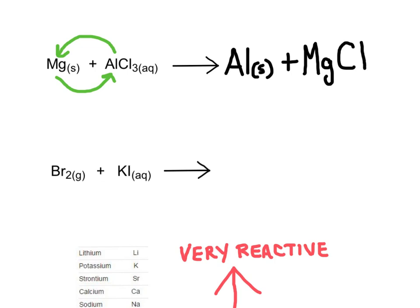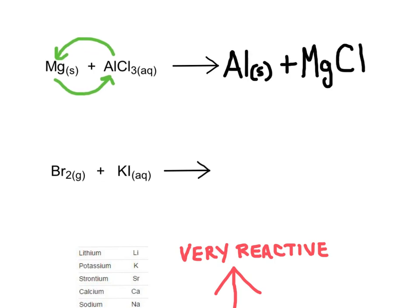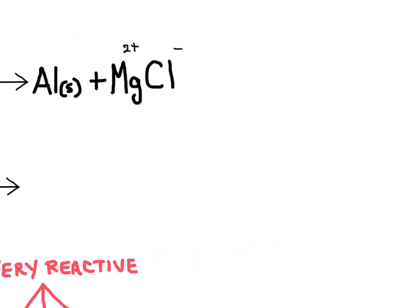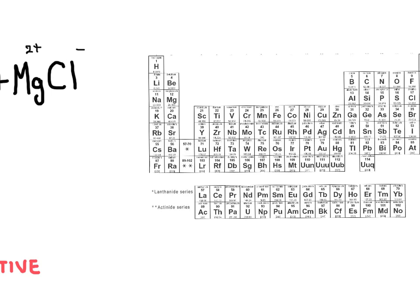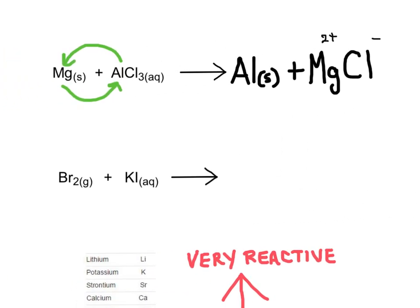To write the product, I need to look at the charges of magnesium and chlorine because they form an ionic compound. Magnesium is a metal and chlorine is a non-metal, so they form ions. Magnesium has a 2+ charge and chlorine has a minus 1 charge, which I know from their locations on the periodic table. Magnesium is in group 2, giving it a 2+ charge; chlorine is in group 7, giving it a minus 1 charge. Those charges need to balance.